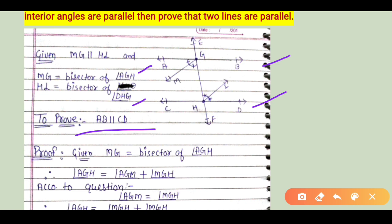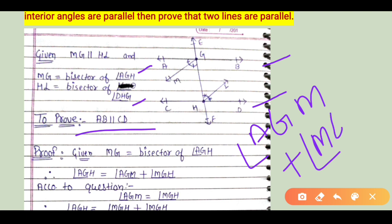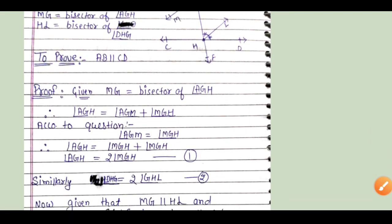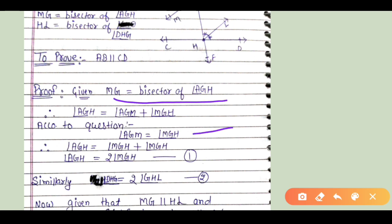MG is the bisector of angle AGH. Since MG bisects angle AGH, it is divided into two equal parts: angle AGM and angle MGH. Therefore, angle AGH equals angle AGM plus angle MGH. According to the question, since MG bisects angle AGH, angle AGM equals angle MGH. This is equation number 1.